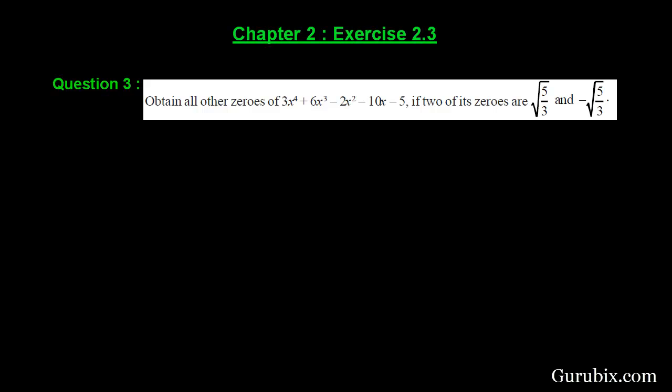Welcome friends. Let us solve question number 3 of exercise 2.3 of chapter 2. The question says: obtain all the zeros of the biquadratic polynomial 3x⁴ + 6x³ - 2x² - 10x - 5, if two of its zeros are √(5/3) and -√(5/3). This is a very interesting question.